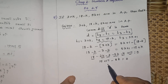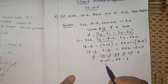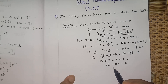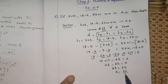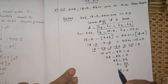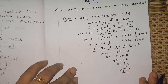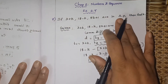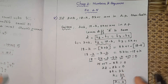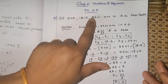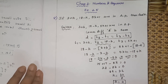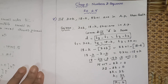So 32 minus 8k equals 0, which gives 8k equals 32, so k equals 32 divided by 8, therefore k equals 4. In this way we found the value of k is 4. When some terms are in AP, the common difference is the same, so set t2 minus t1 equal to t3 minus t2 and solve for the unknown. Thank you children, please subscribe to my channel.